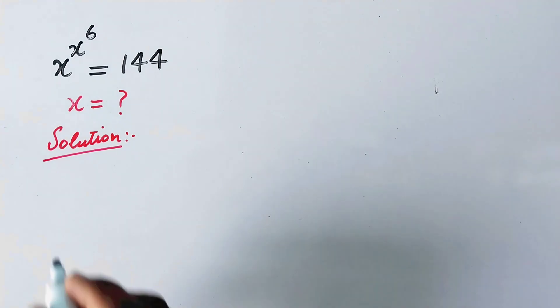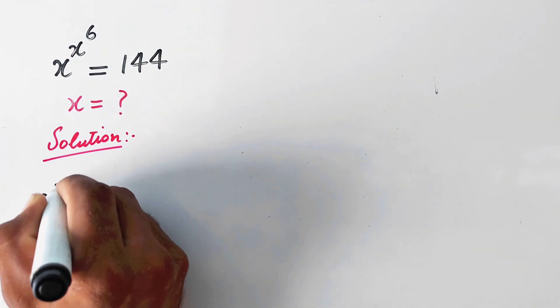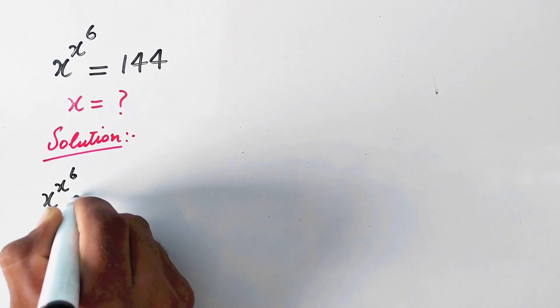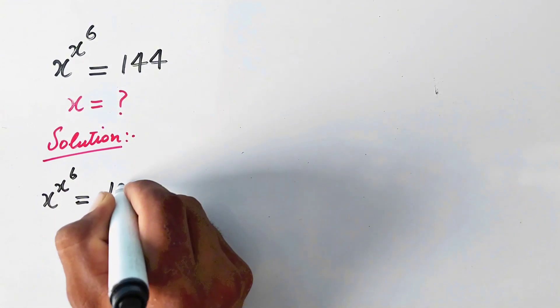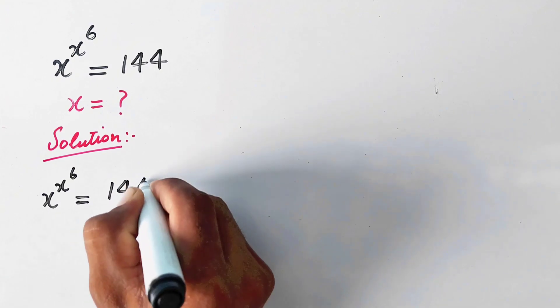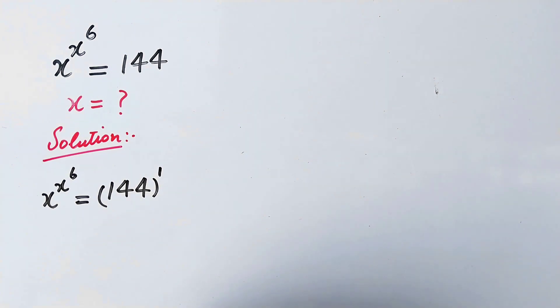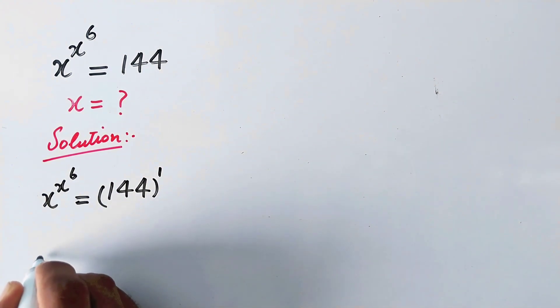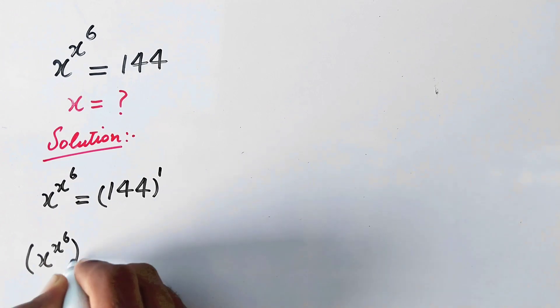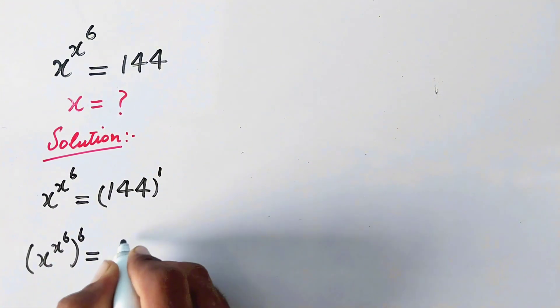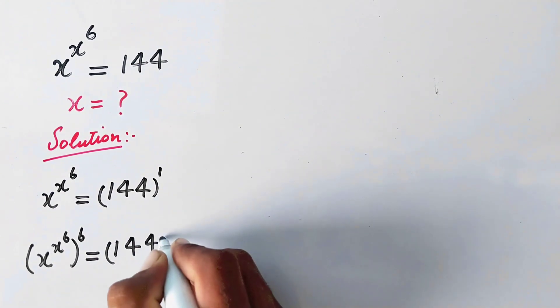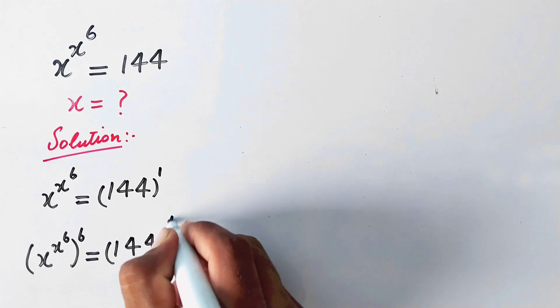First of all, we can write x^(x^6) = 144^1. Now we will take the 6th power on both sides, so x^(x^6) will be raised to power 6, and 144 will also be raised to power 6.